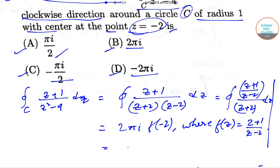This will be equal to 2 pi i, we'll replace z equal to minus 2 in f of z. This will give us minus 2 plus 1 upon minus 2 minus 2. Upon solving this will give us pi i by 2, which is option a.